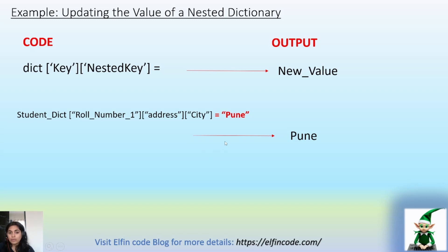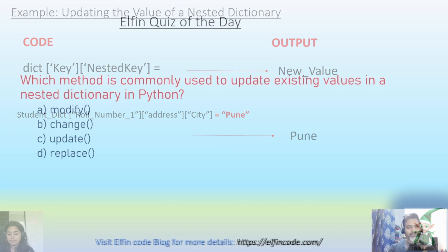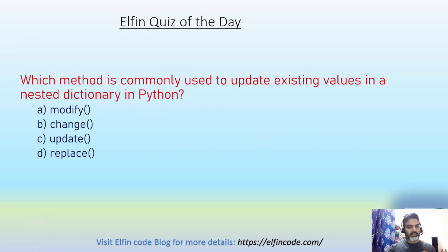Elfin Code quiz of the day: which method is commonly used to update an existing value in a nested dictionary in Python? A) modify, B) change, C) update, D) replace. Please provide your answer in the comment section. That's it for today's video. Thank you for watching — do subscribe to Elfin Code for future updates.